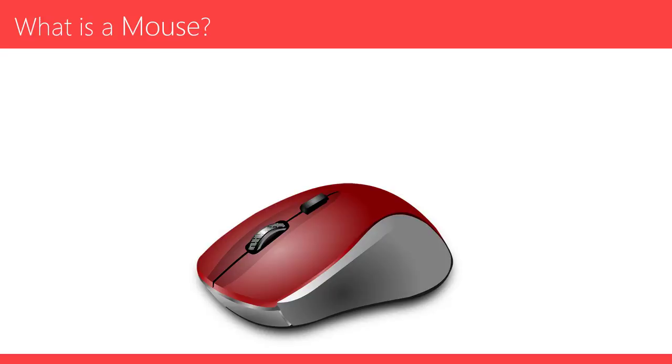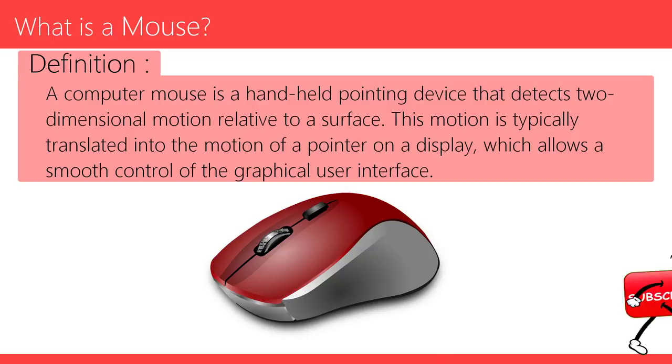What is a mouse? A computer mouse is a handheld pointing device that detects two-dimensional motion relative to a surface. This motion is typically translated into the motion of a pointer on a display, which allows a smooth control of the graphical user interface.